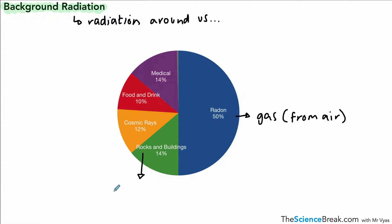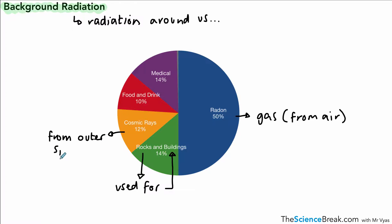We've also got some types of rock that are radioactive, and if those rocks are used for making buildings, that means rocks and buildings are a source of background radiation. We've got cosmic rays — rays that come from outer space and fall on planet Earth — and also food and drink. For example, did you know that bananas contain or give out small amounts of radiation? Nothing dangerous, but they do.